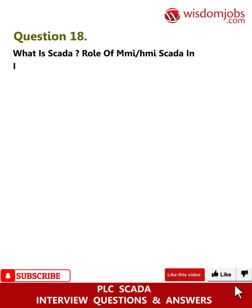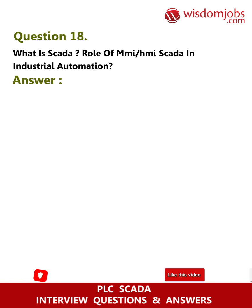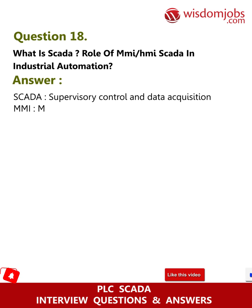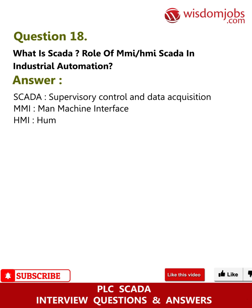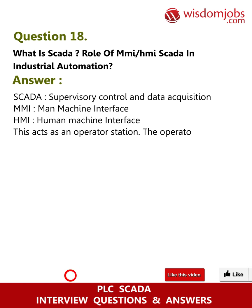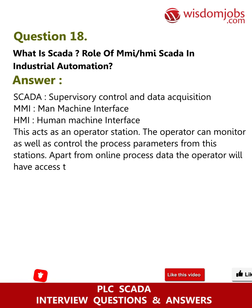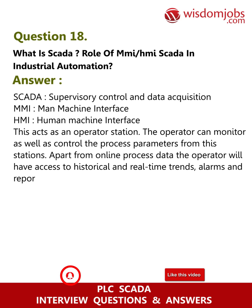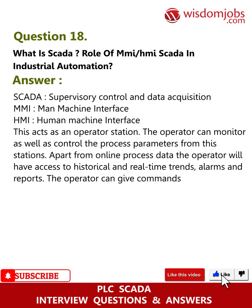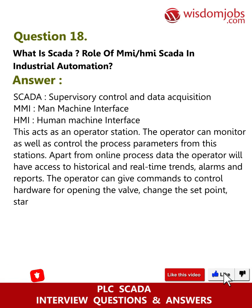Question 18: What is the role of MMI/HMI/SCADA in industrial automation? Answer: SCADA — Supervisory Control and Data Acquisition. MMI — Man Machine Interface. HMI — Human Machine Interface. This acts as an operator station. The operator can monitor as well as control the process parameters from this station. Apart from online process data, the operator will have access to historical and real-time trends, alarms, and reports.